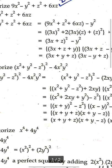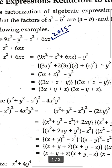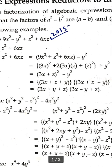Consider the following examples. Example number 1: factorize 9x² minus y² plus z² plus 6xz. Here we have 9x² minus y² plus z² plus 6xz, and we focus on reducing it to the a² minus b² form. We can write 9x² plus 6xz plus z² as (3x + z)².